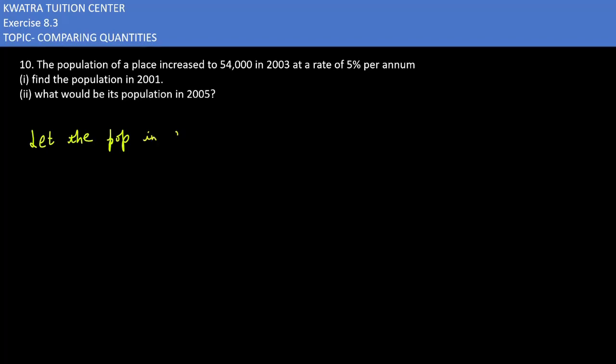We are considering the population of 2001 as x, or I can take it as my principal. From one way, how much is it? 54,000 in two years. Rate is given as 5%, time period is given as 2 years.